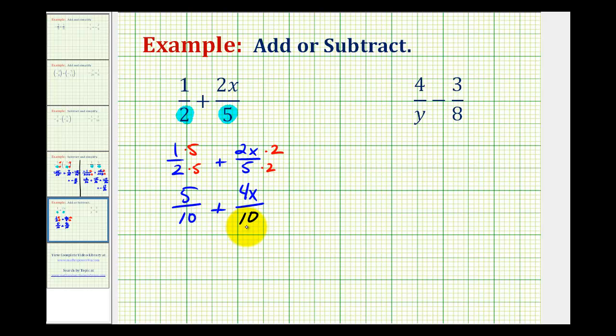So this would give us 5 tenths plus this would be 4x all over 10. Now that our denominators are the same, we can go ahead and add these fractions. The denominator stays the same and then we add the numerators. And so we have 5 plus 4x.